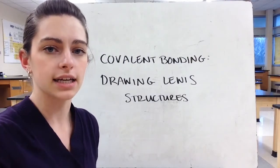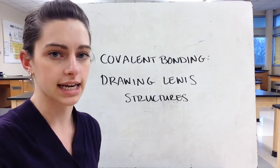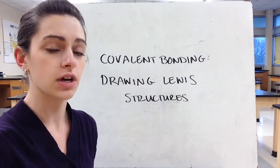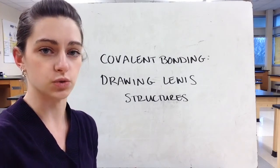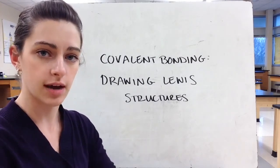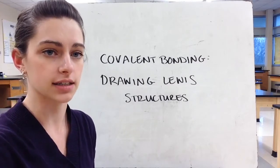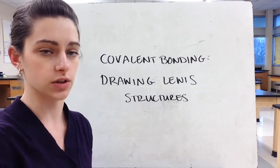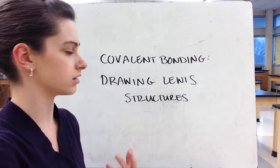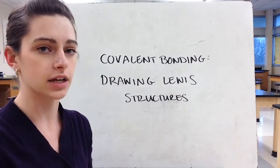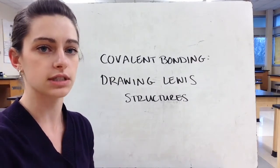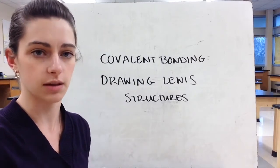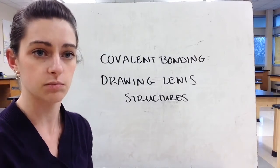We've done bonding and naming of ionic compounds, and we've done naming of covalent compounds, so now we're going to learn how to draw covalent compounds, or draw how they bond. We call these drawings Lewis structures — you'll hear them called Lewis dot diagrams, Lewis dot structures, or Lewis structures; they're all the same thing. They were developed by a scientist named Lewis.